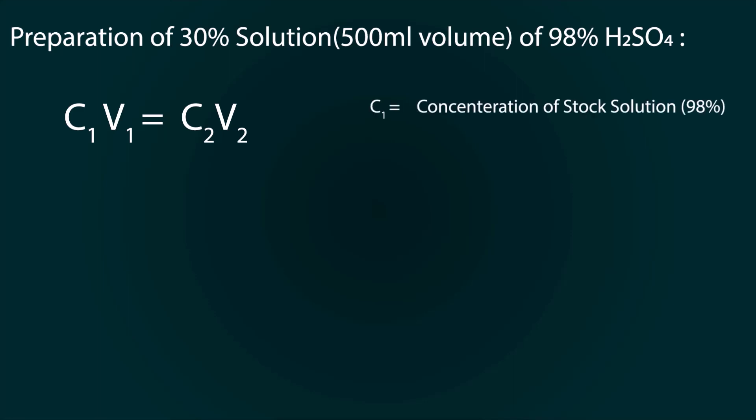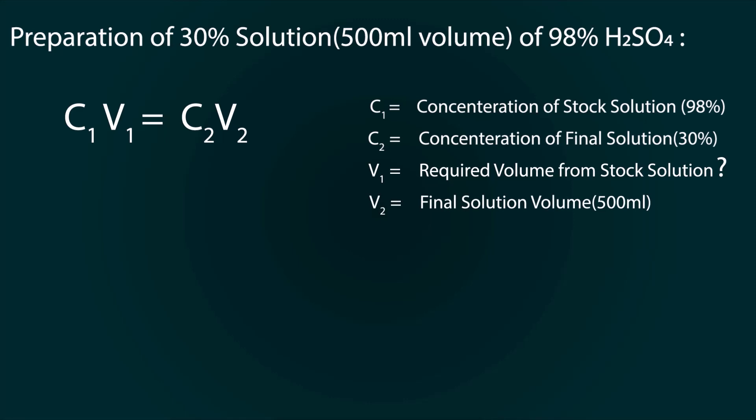C1 is concentration of stock solution which is 98%. C2 is concentration of final solution which is 30%. V1 is required volume from stock solution. V2 is final solution volume which is 500 ml.